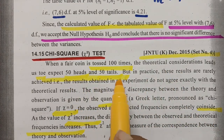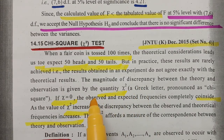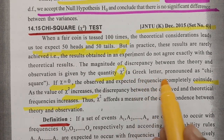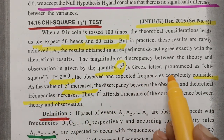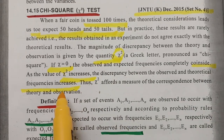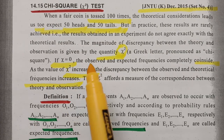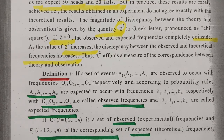According to theory, we need 50 heads and 50 tails, but in practice it may or may not happen. The difference between the expected value and the observed value is calculated using chi-square. If chi-square equals 0, the expected and theoretical values coincide. If it increases, the variation also increases. Chi-square offers a measure of the correspondence between the theory and the observations.